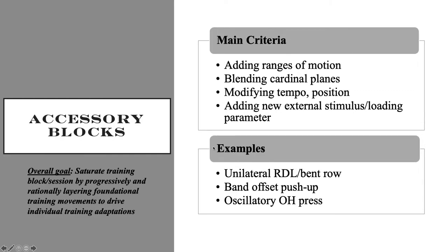Good intraset examples include dead bugs and bird dogs, multi-directional plank variations, and pulsing movements. For accessory blocks, we're trying to saturate the session by progressively and rationally layering foundational training movements to drive individual adaptations. Someone who lacks fundamental strength gets a bilateral barbell RDL with an eccentric tempo, whereas someone who lacks reflexive strength gets a dumbbell single-leg, single-arm RDL with a reflexive impulse at end range. Same movement, done differently.